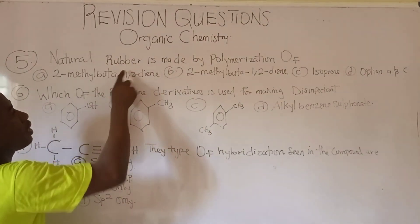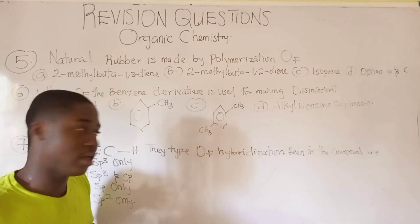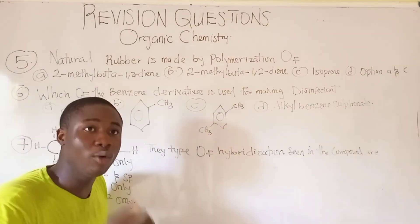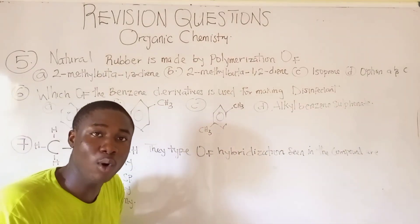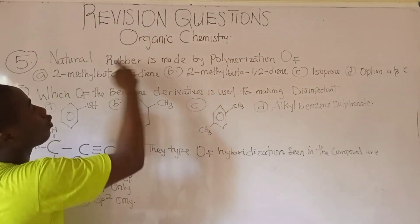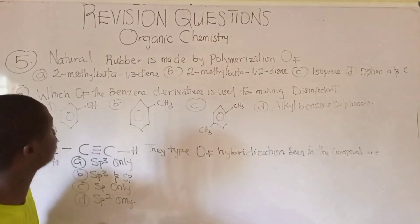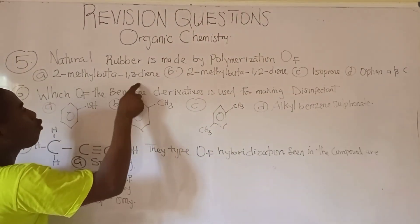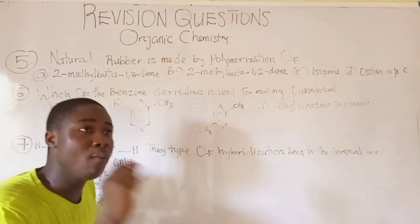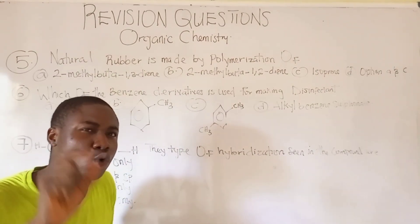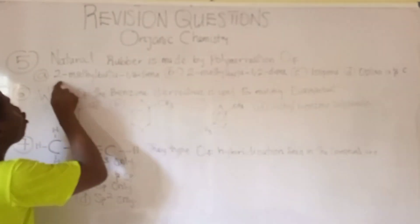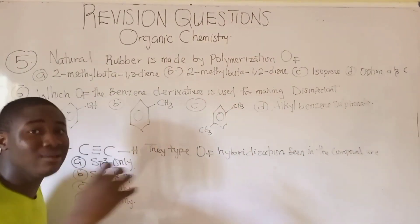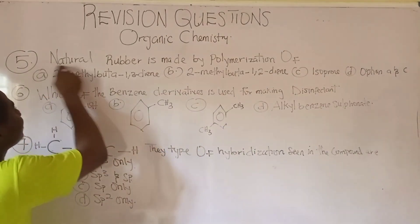Moving to question 5: natural rubber is made by polymerization of what? They are asking for the monomer units that make up natural rubber. The monomer unit is 2-methylbuta-1,3-diene, which is also called isoprene.